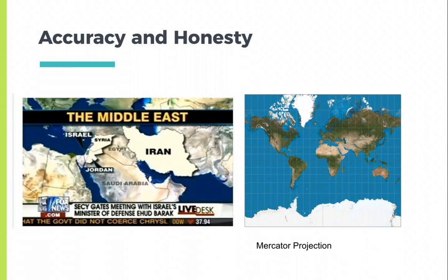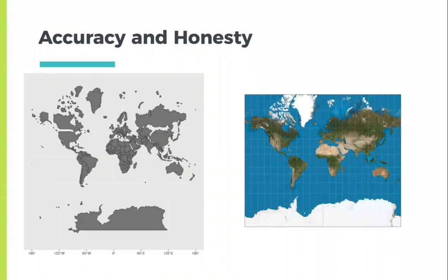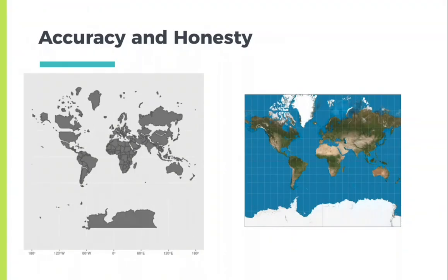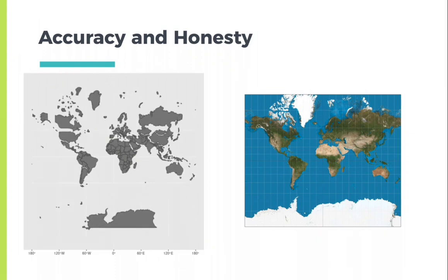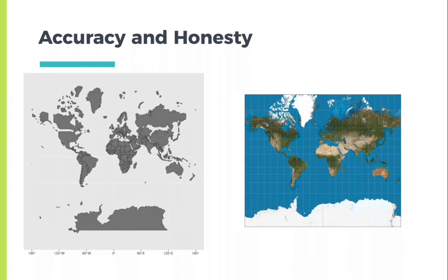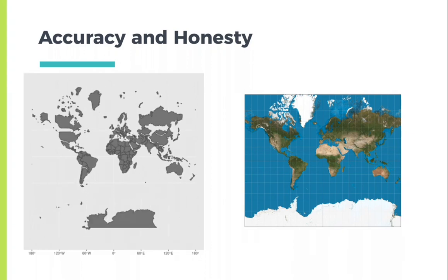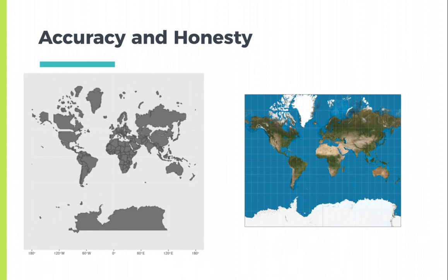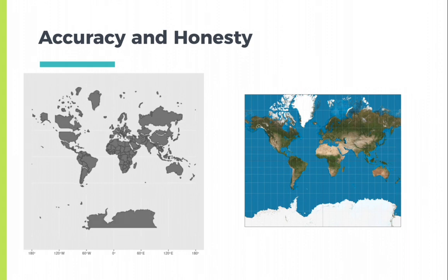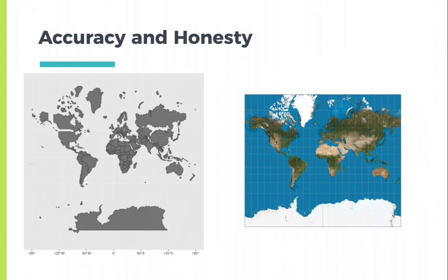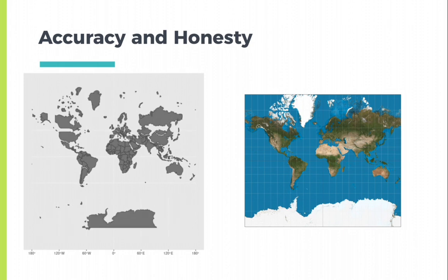On the right-hand side, we have the Mercator Projection, created in 1569, which is a very common but highly inaccurate map of the globe. As you can see from the GIF, the actual size of many of the countries depicted is considerably smaller than they are shown. The cylindrical projection of the map was useful for nautical navigation, since every line of the sphere is a constant course. The sizes of land masses become increasingly distorted the further away from the equator they get. The Mercator map inadvertently inflates the sizes of Europe, North America, Canada, and Russia.